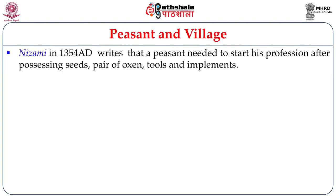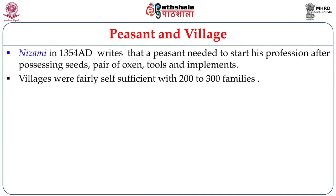Discussing the peasants and their abode, the villages: Nizami in 1354 writes that a peasant needed to start his profession by possessing seeds, a pair of oxen, and tools and implements. Since land was abundant, it was a commodity that could be used by anyone who could possess a pair of oxen, seeds, and implements. Getting inducted into the peasantry was an easy task according to the sources. Villages were fairly self-sufficient and each village approximately comprised 200 to 300 families.